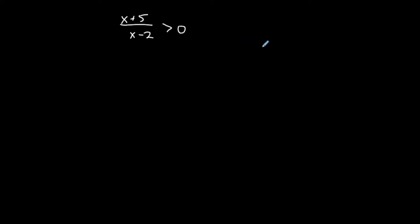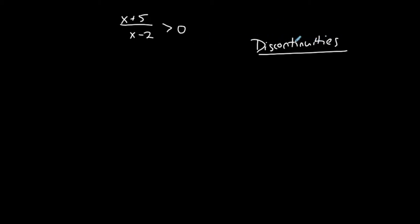I want to talk about discontinuities first. These are the values that don't go into the domain — the values of x that are not allowed. As you can see, the denominator will be zero when x equals two. So x is not allowed to be equal to two, meaning one of my discontinuities is two. Keep in mind that x cannot equal two when solving this.